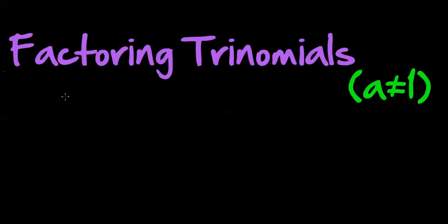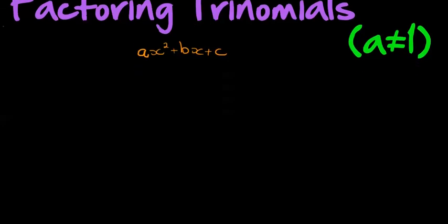Welcome again to factorizing trinomials. This time we're looking at a trinomial where the leading coefficient is not one — in other words, I literally have a coefficient in front of my x squared term in ax squared plus bx plus c. The first thing to note is that sometimes this leading coefficient can be taken out as a common factor.